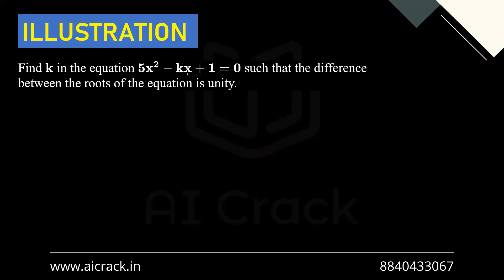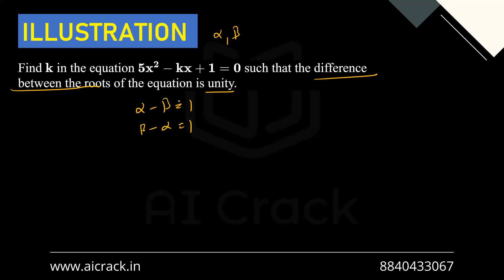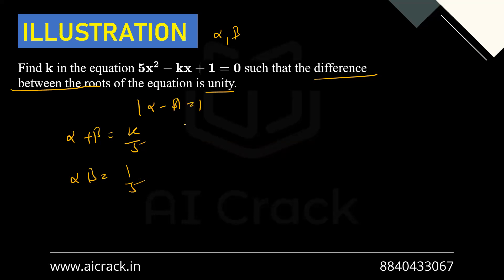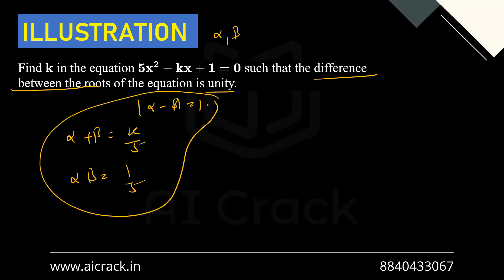Let's solve: find k in 5x² − kx + 1 = 0 such that the difference between roots is unity. The key phrase is 'difference between roots is unity,' meaning |α − β| = 1. We also have α + β = k/5 and αβ = 1/5. We need to find a relation between α + β and α − β.